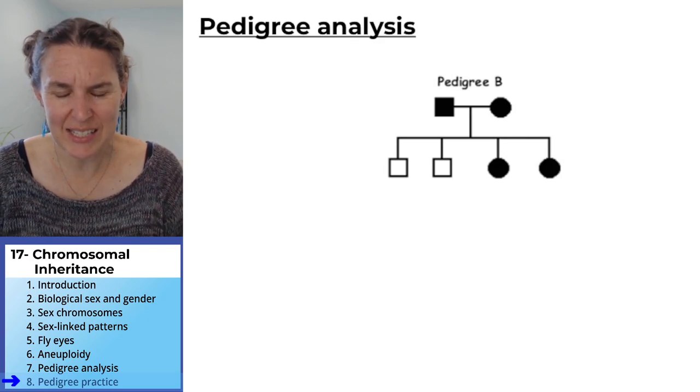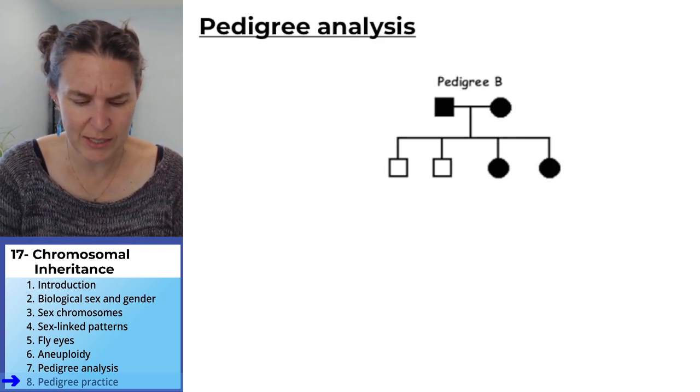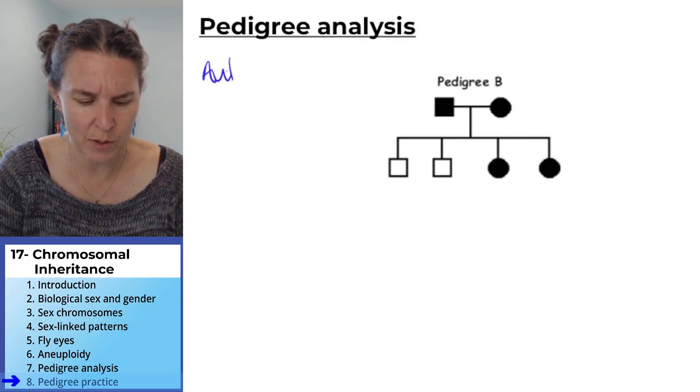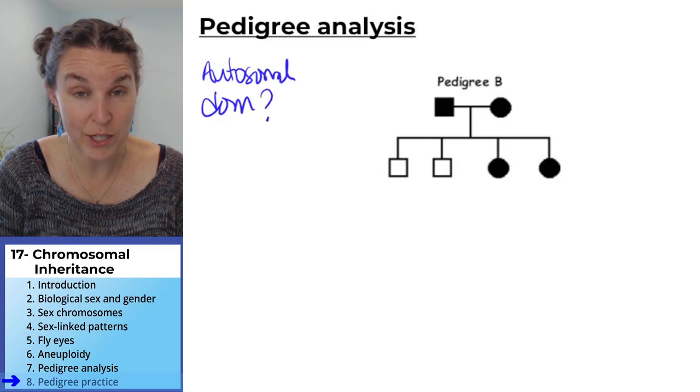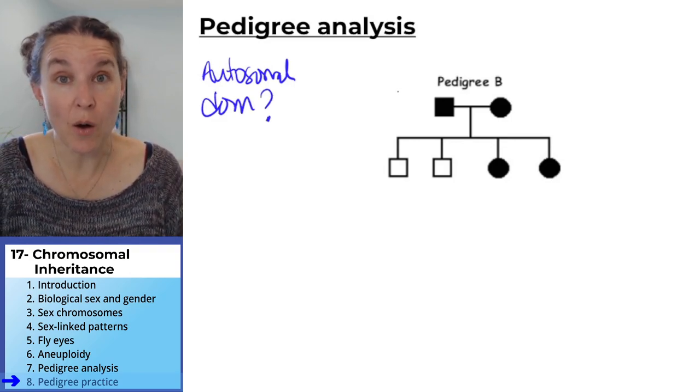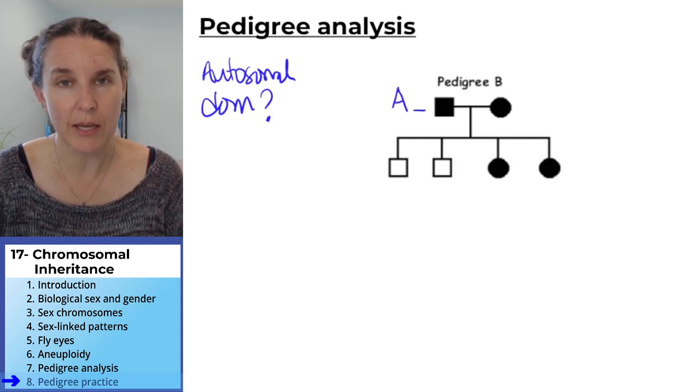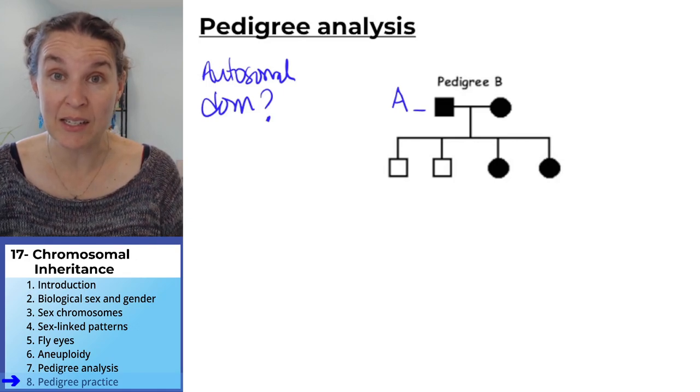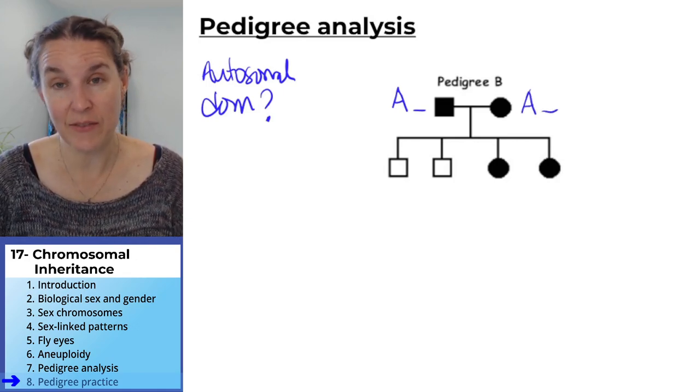Should we check and see if it is dominant? Let's check autosomal dominant. Well, we know if it's autosomal dominant, all we know is that there's at least one copy, and both parents have at least one copy.